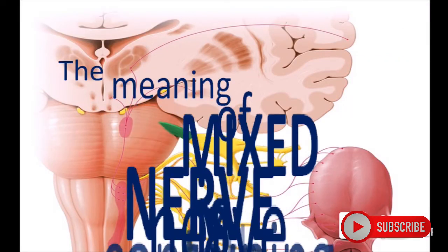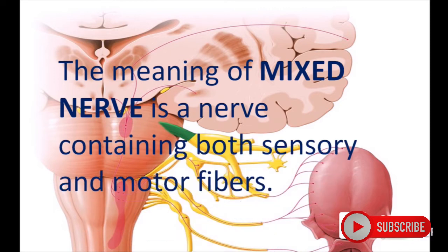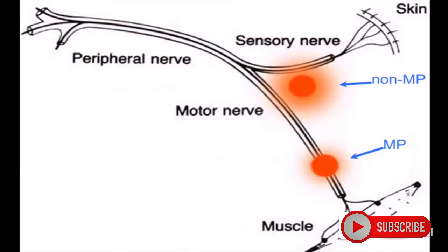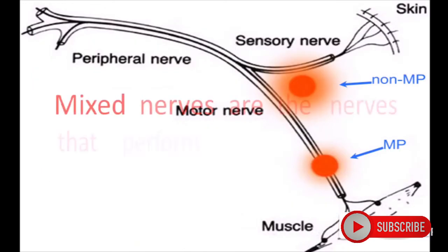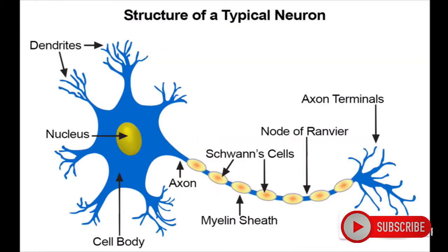The mixed nerve contains both sensory and motor fibers. Mixed nerves perform both the action of sensory nerves as well as motor nerves. More about the function and structure of the neuron — the structural and functional unit of the nervous system — will be discussed in the next part.